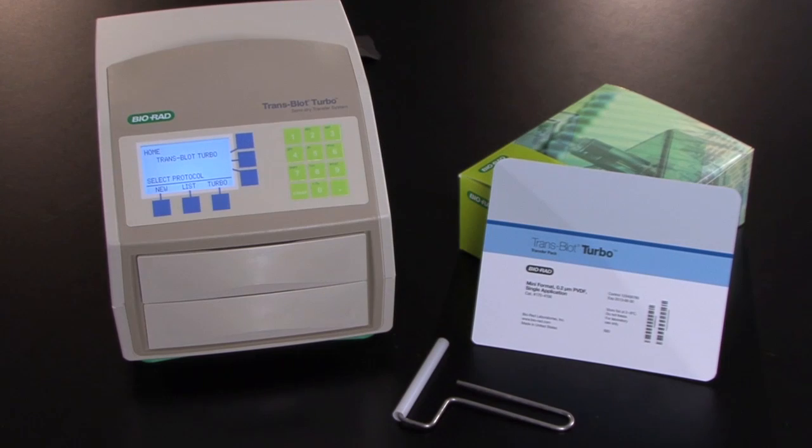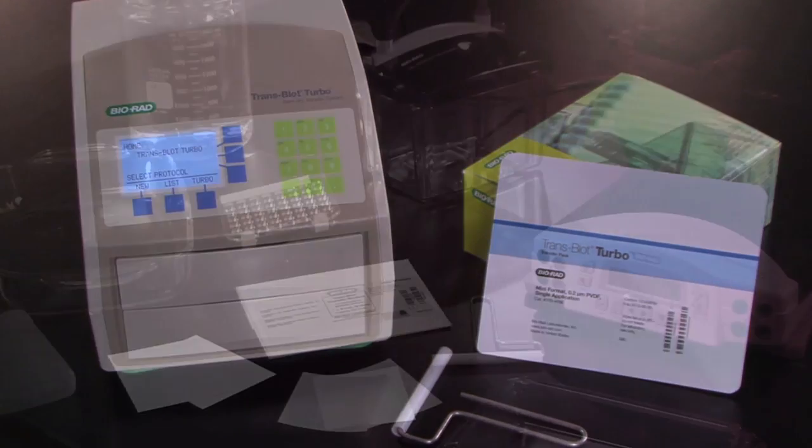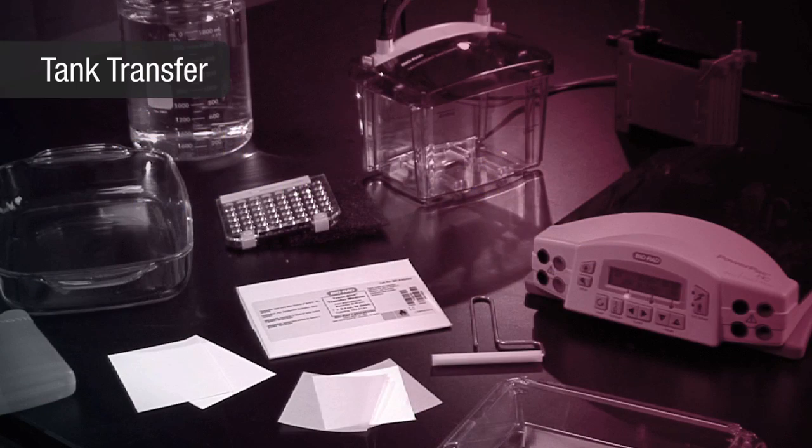The convenience of the Trans-Blot Turbo system is demonstrated by the number of components needed for blot assembly. For tank transfer, you need a Mini Trans-Blot electrophoretic transfer tank, a Mini Trans-Blot module, a power supply, ice pack, and stir bar.